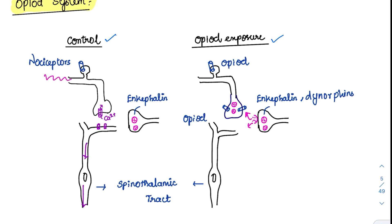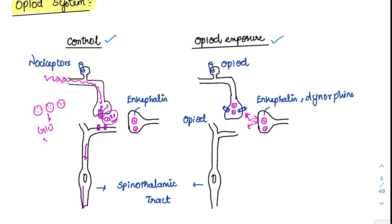When pain is transmitted and reaches the presynaptic terminal, calcium entry triggers the release of stored vesicles containing neurotransmitters — glutamate and substance P. Once released, these neurotransmitters act on the postsynaptic terminal and are carried toward the thalamus and somatosensory cortex.